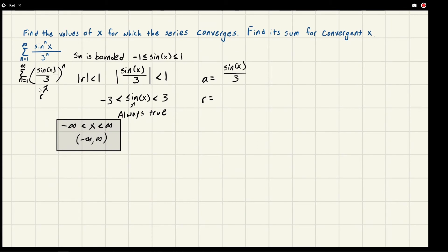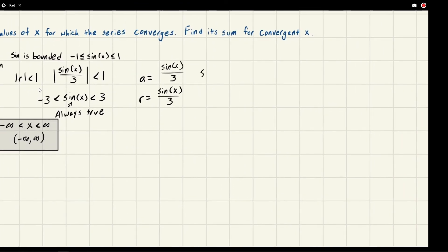r is the common ratio, which is given by what's inside the parentheses here because it's raised to the n. So this is the common ratio—sine x over three again. We know that for a geometric series, the sum is equal to a over one minus r.